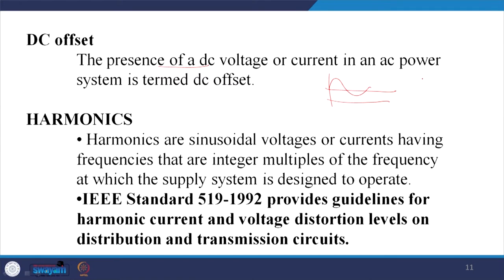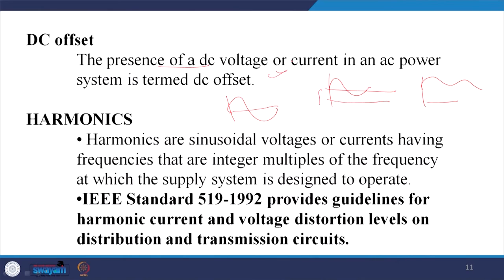DC offset is the presence of a DC voltage or current component in an AC power system. If you feed a DC voltage along with AC, the resultant will carry a DC offset. It also occurs when positive and negative areas of the waveform are mismatched, which happens when triggering pulses are not symmetric. DC offset can generally be eliminated by properly switching thyristor-based devices and keeping the positive and negative areas equal.